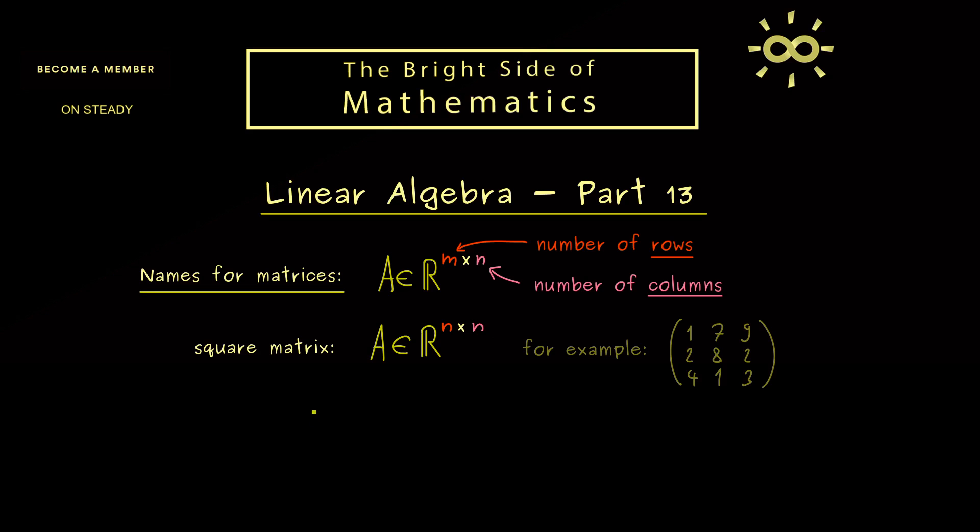Indeed square matrices occur often but don't forget it's always a special case. Another special case for a matrix would be to have just one column and then we would call it a column vector. Of course it's still a matrix by definition but it looks like a vector.